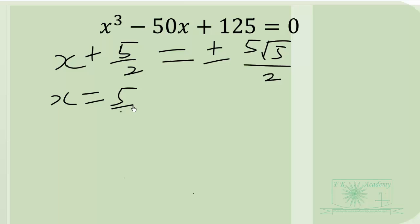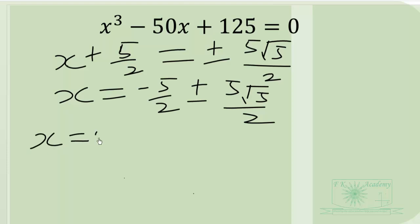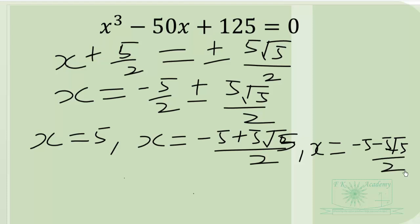So x equals negative 5/2 plus or minus 5 root 5 over 2. This gives us either x equals negative 5 plus 5 root 5 over 2, or x equals negative 5 minus 5 root 5 over 2. Together with x equals 5 found earlier, these are the three real number solutions to the cubic equation x cubed minus 50x plus 125 equals zero.